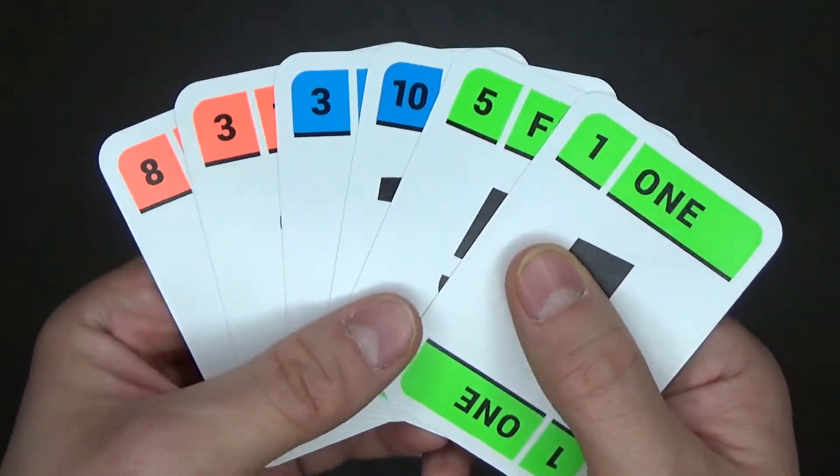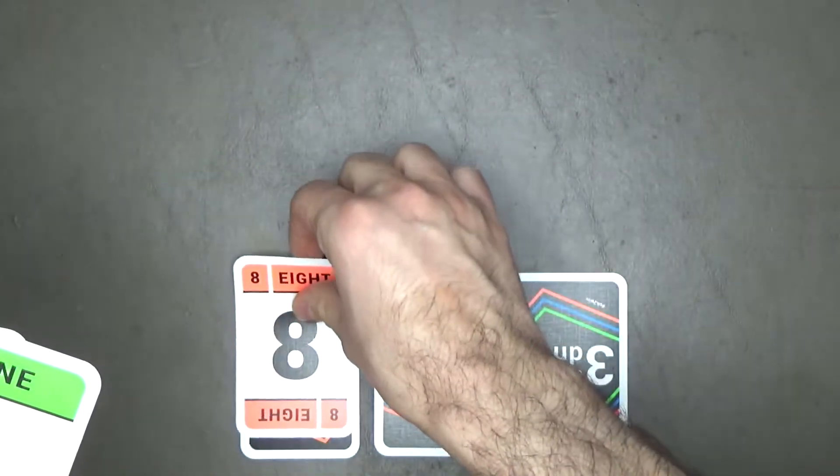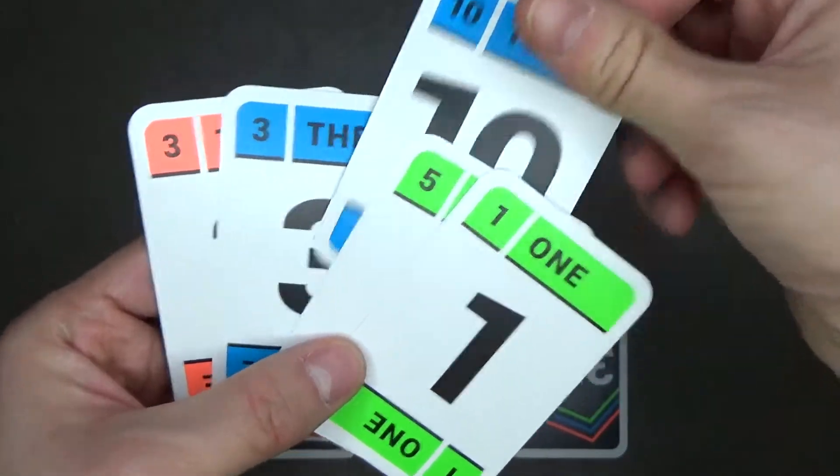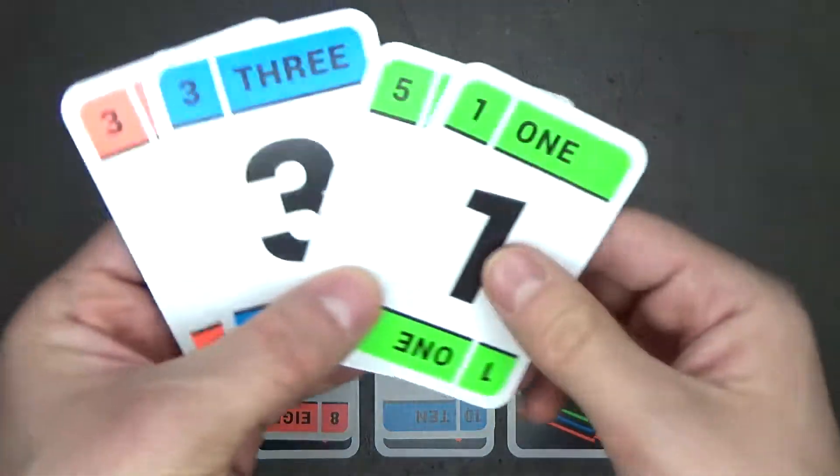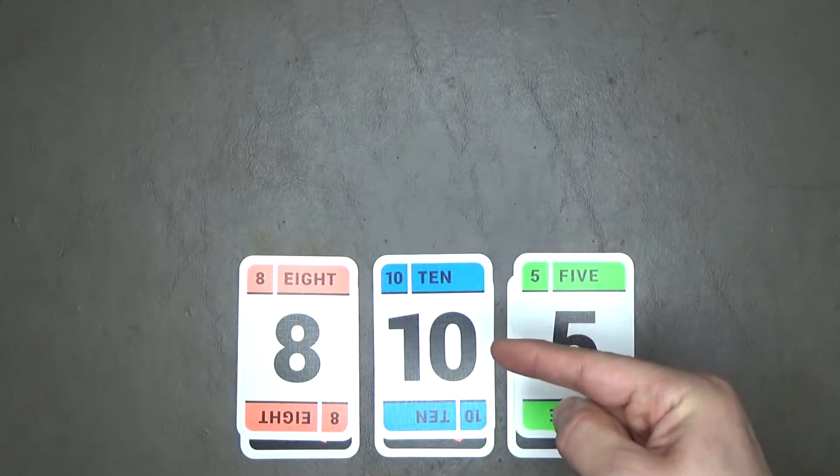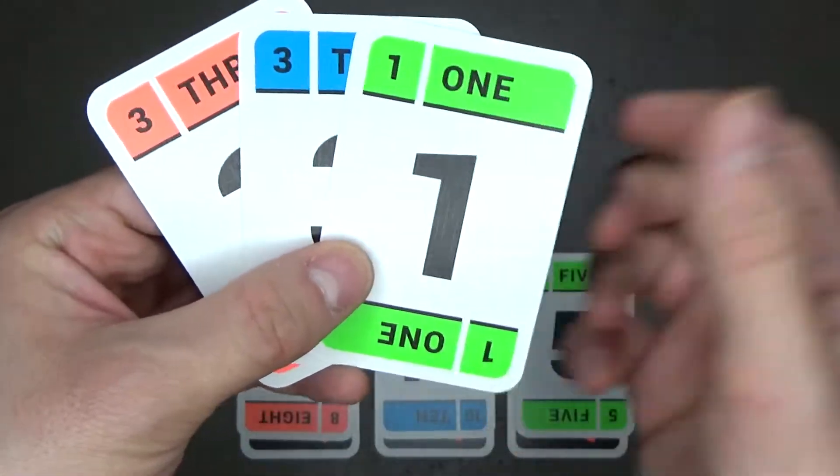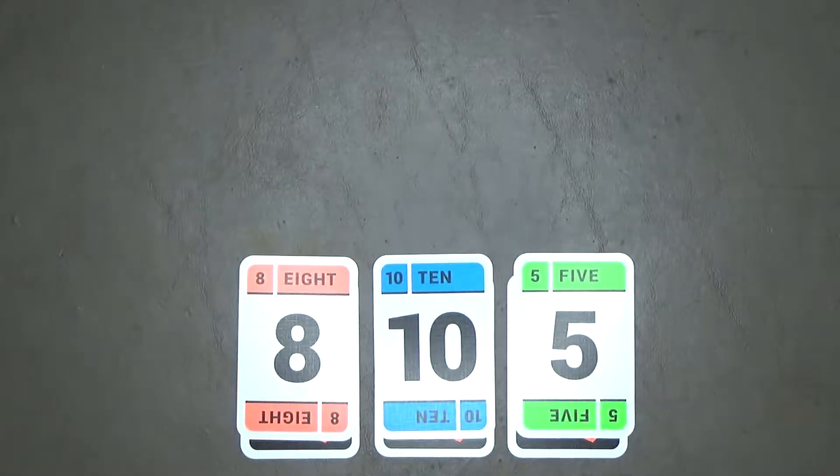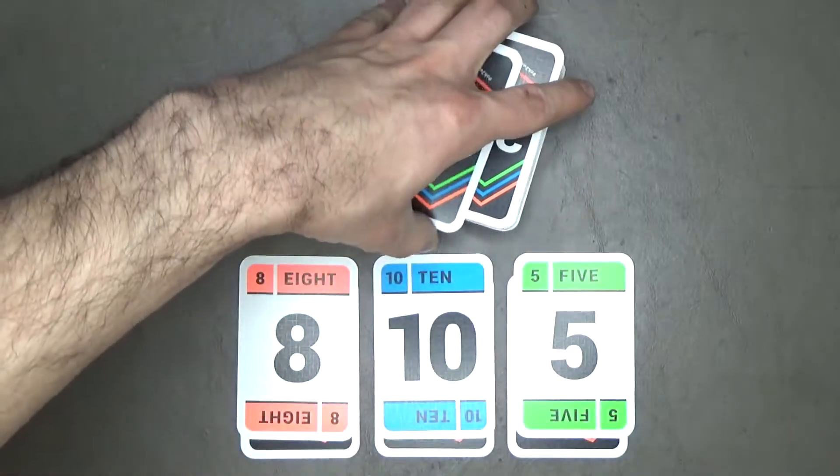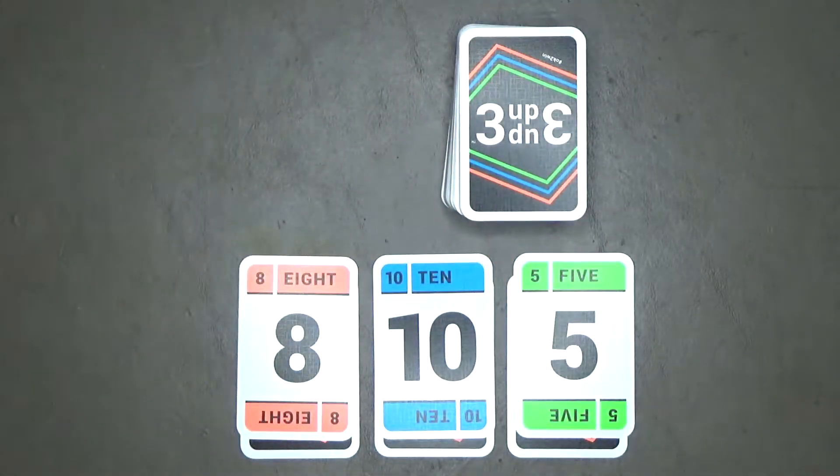Then each player is going to take 3 of the 6 cards from their hand and place them face up on top of the face down cards shown like this. This right here is your 3 up, 3 down pile. And the cards in your hand, well they stay in your hand. The dealer then puts the draw pile in the center of play for everyone to reach and then make room for a discard pile.